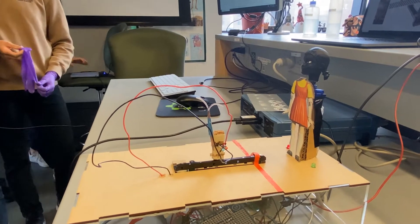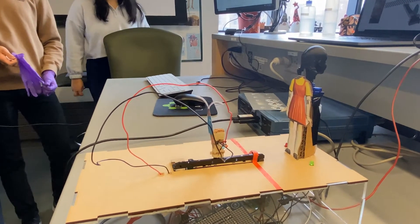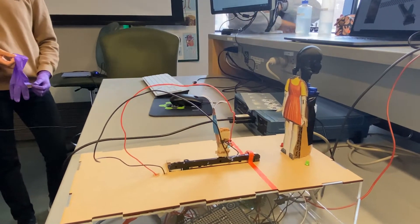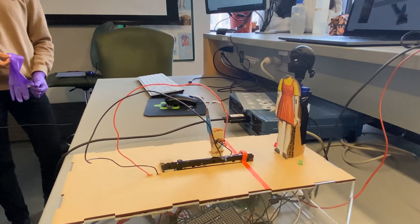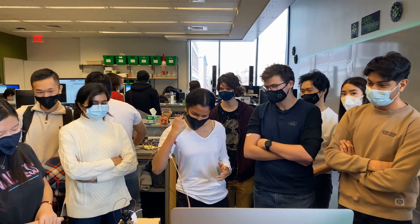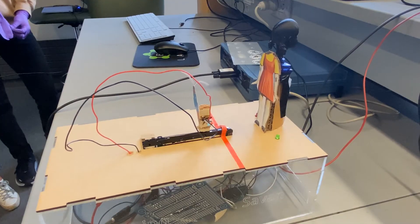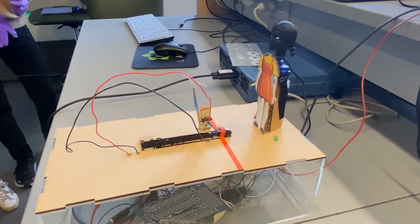We also have a servo motor controlling head rotation, LED lights indicating red or green light, and output to the cockroach. When you move, the cockroach also moves through a series of extensions and contractions that emulate walking.